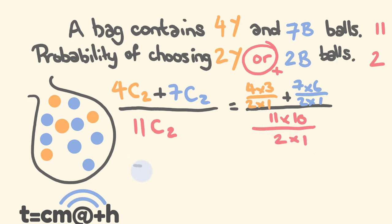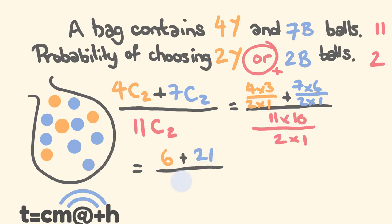Let's solve this. 4×3 = 12, divided by 2 = 6. Added to: 7×6 = 42, divided by 2 = 21. The denominator: 11×10 = 110, divided by 2 = 55. So 6+21 = 27, over 55. That's the probability of choosing two yellow or two blue balls from this bag.